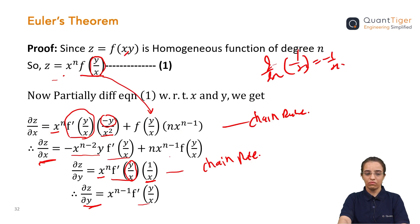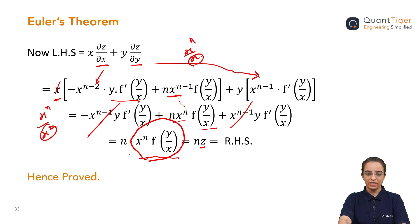To summarize: we considered z as the given function in terms of x and y, represented it as x^n · f(y/x), then differentiated partially with respect to x and y using the chain rule. After substituting and simplifying, we obtained the right-hand side n·z. Hopefully you have understood. Let's take a small break — in the next video we will be discussing this more in detail.